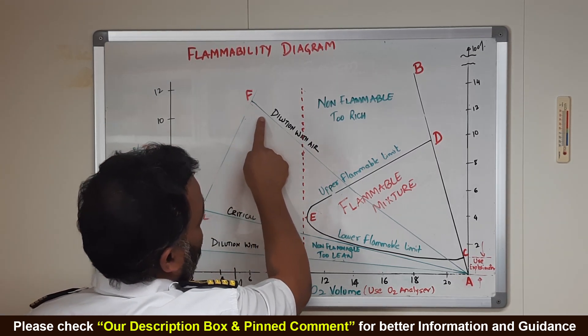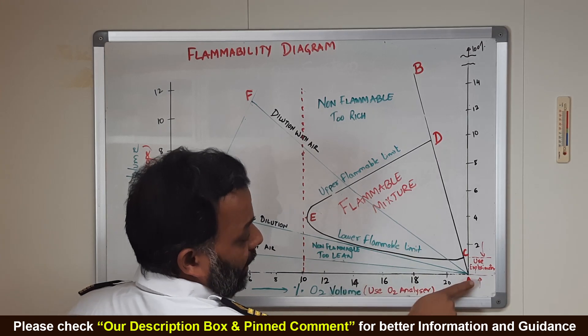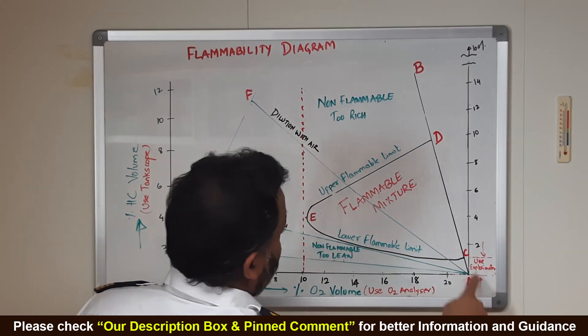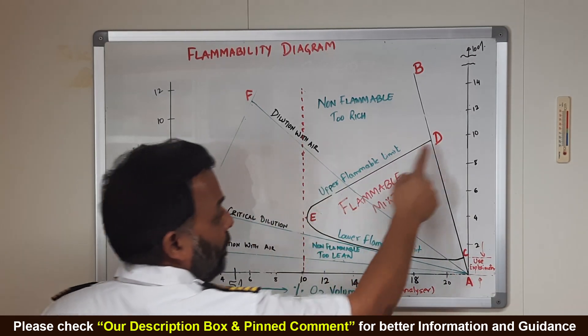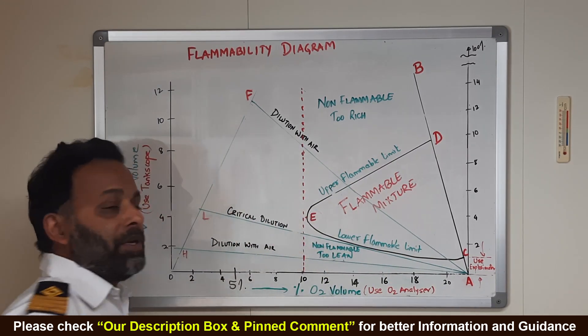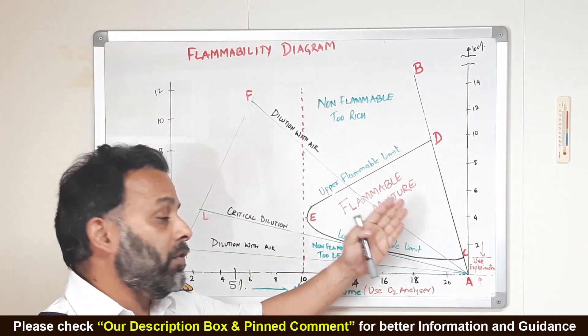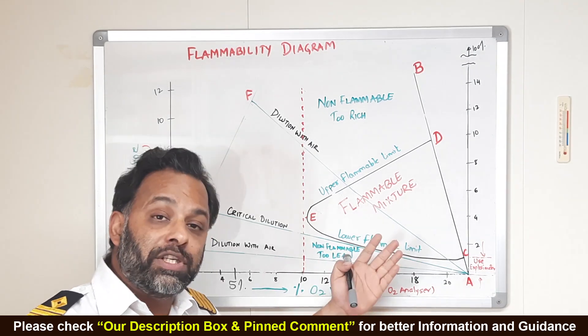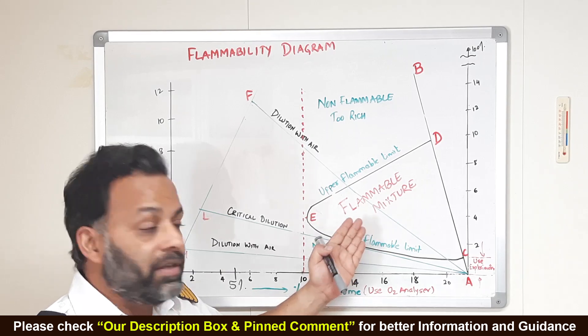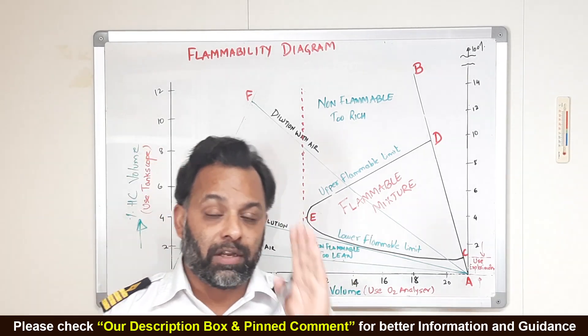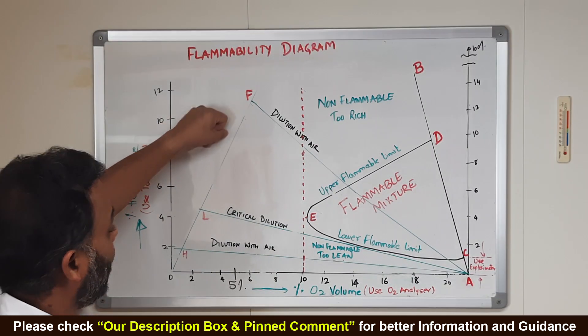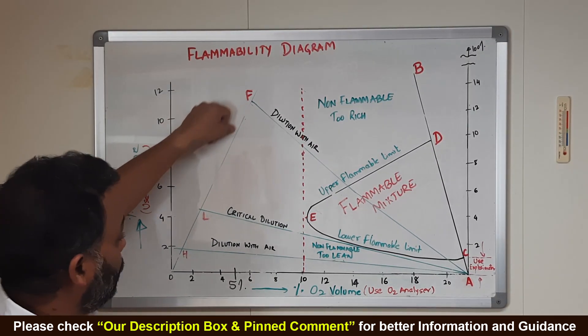And if it is at some point, let's say F, and we introduce air into the system, the atmosphere of that tank will go like this, where, ultimately, it will reach to 20.9% oxygen. But it will pass through this flammable mixture region. It is passing through this flammable mixture region, where the ratio of the hydrocarbons and oxygen is sufficient enough so that a fire can take place. This is hazardous area. This is what we do not want. So that is why, when we are discharging, we continue to pump more inert gas into the system. And we bring this point F to H.